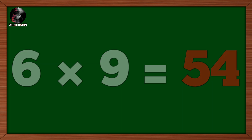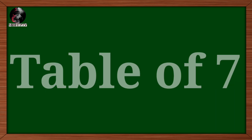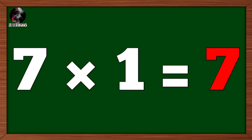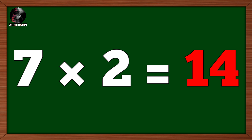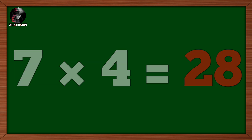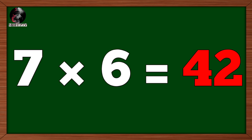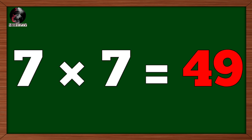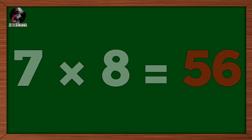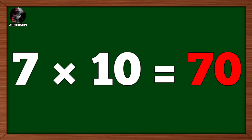Six seven's are forty-two. Six eight's are forty-eight. Six nine's are fifty-four. Six ten's are sixty. Table of seven. Seven one's are seven. Seven two's are fourteen. Seven three's are twenty-one. Seven four's are twenty-eight. Seven five's are thirty-five. Seven six's are forty-two. Seven seven's are forty-nine. Seven eight's are fifty-six. Seven nine's are sixty-three. Seven ten's are seventy.